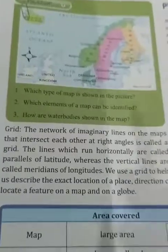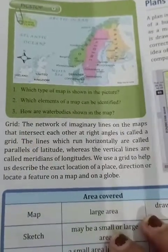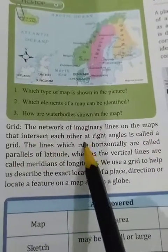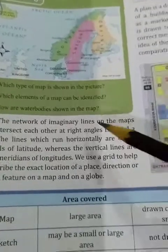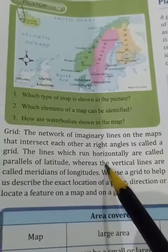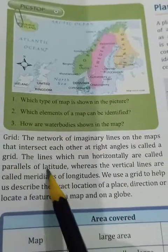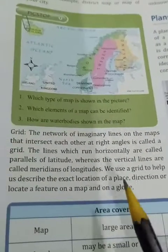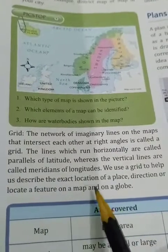The next element is Grid. The network of imaginary lines on maps that intersect each other at right angles is called a grid. The globe has horizontal and vertical lines that intersect at 90 degrees. We use a grid to help describe the exact location, direction, and features on a map or globe.